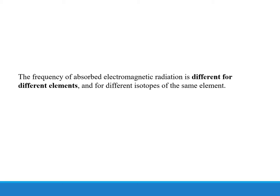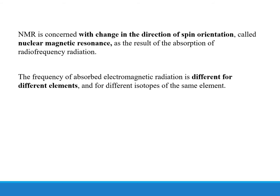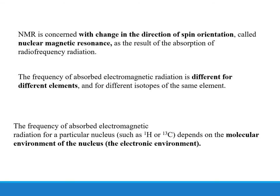The frequency of absorbed electromagnetic radiation is different for different elements and for different isotopes of the same element. NMR is concerned with the change in the direction of spin orientation, called nuclear magnetic resonance, as the result of the absorption of radiofrequency radiation. The frequency of absorbed electromagnetic radiation for a particular nucleus, such as proton or carbon, depends on the molecular environment of the nucleus — the electronic environment.